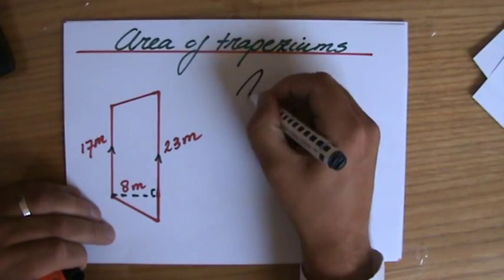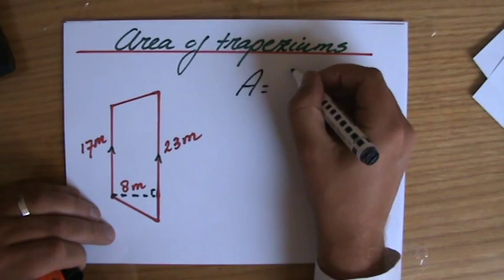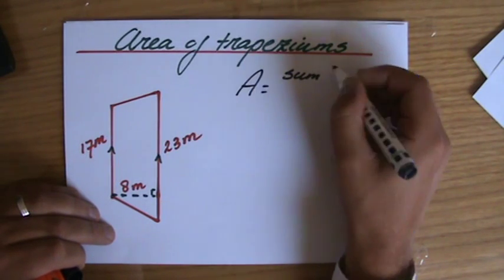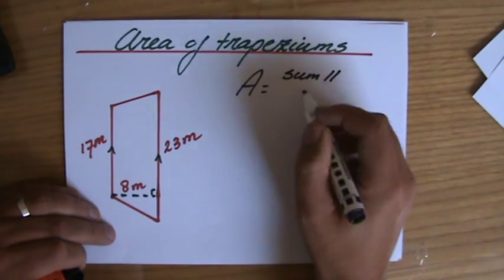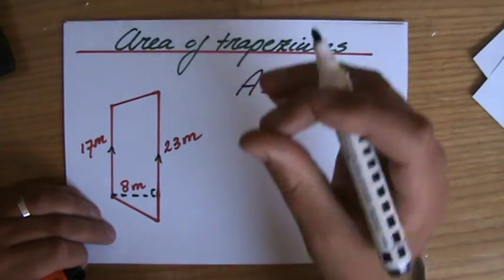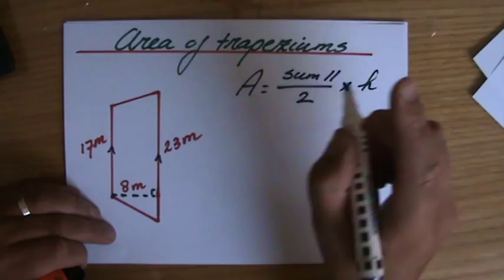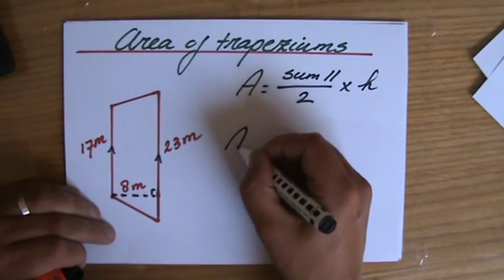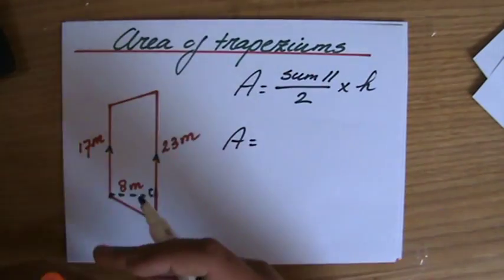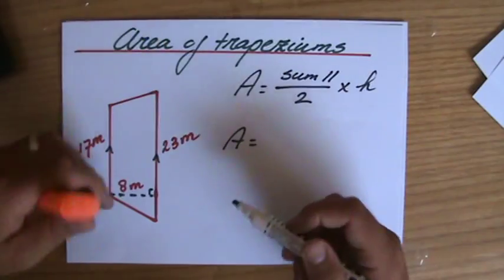The general formula I've explained in previous videos is the sum of the parallel lines, that's the symbol for that, divided by 2, because we want to know the average of that or the mean, times the height, the perpendicular height. Make sure you've seen those previous videos because I explained that formula.